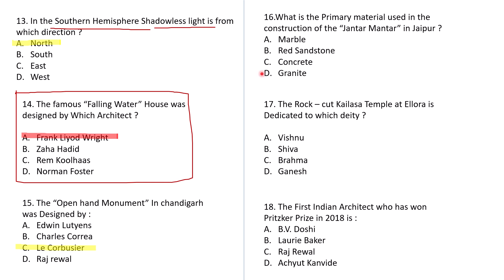Question number 16: What is the primary material used in the construction of Jantar Mantar in Jaipur? A: Marble, B: Red Sandstone, C: Concrete, D: Granite. The correct answer is B — Red Sandstone.